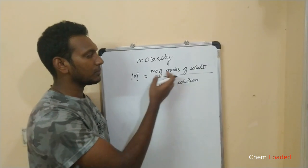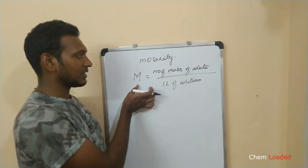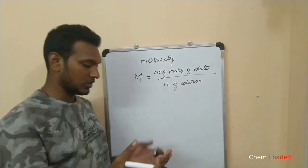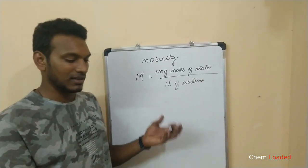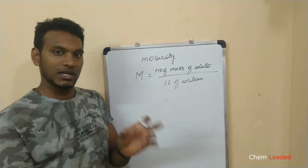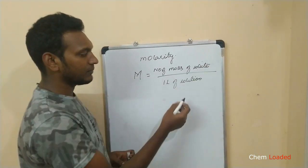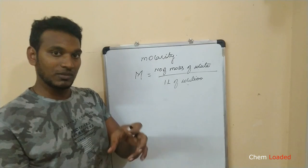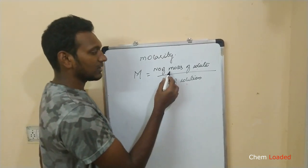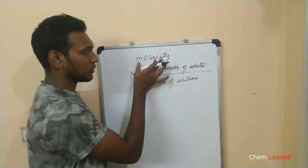If we want to define a solution, we will talk about the number of moles of solute — this is the term molarity. For example, when we talk about water and salt, the salt is added to the water. The whole mixture is called the solution, and the dissolved substance is called the solute.